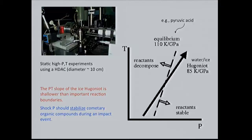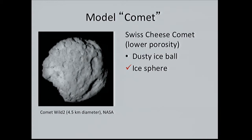Now I'll move to models and the lab. For our model comet — we don't know much about comet structure, whether it's a porous Swiss cheese comet or a dirty ice ball — we simplify and model it as a sphere of ice. This is a picture of the comet the Stardust mission sampled.